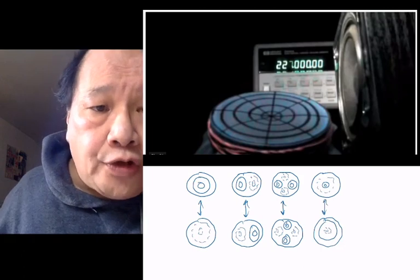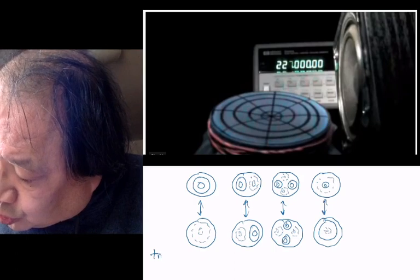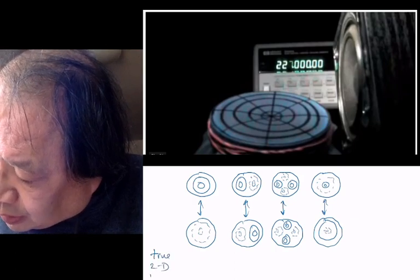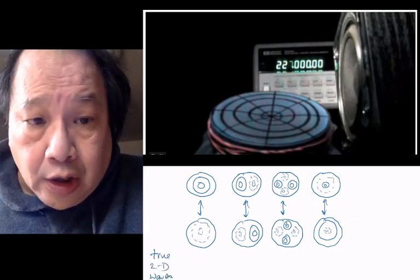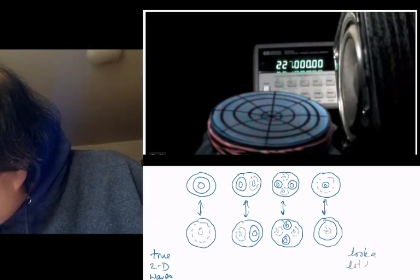And these are the first four real true 2D waves. And 2D waves look a lot like 3D waves.